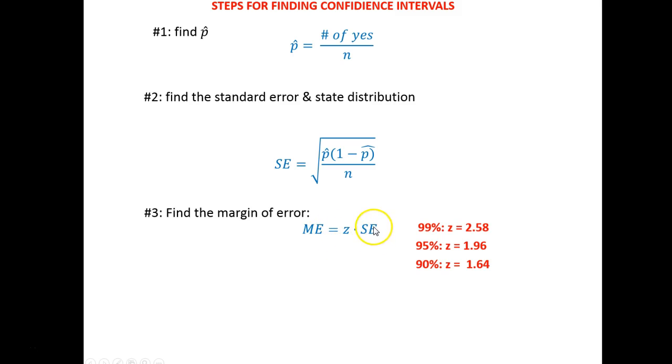Then we find the margin of error. Margin of error is Z times standard error. Now what Z is here? Z is one of these three numbers depending on how big I want my confidence interval to be. So if I ask for a 95% confidence interval, I'm going to plug in 1.96. So I need to keep that in my notes so I can reference what number of Z am I going to be using to find my margin of error.